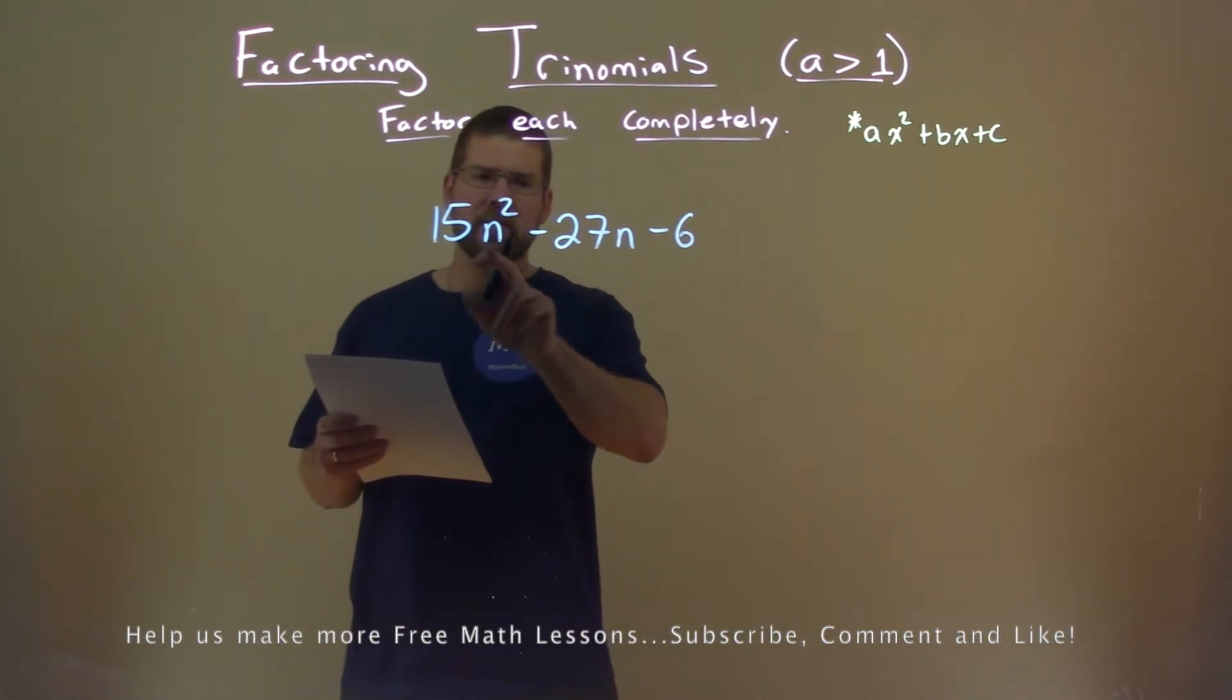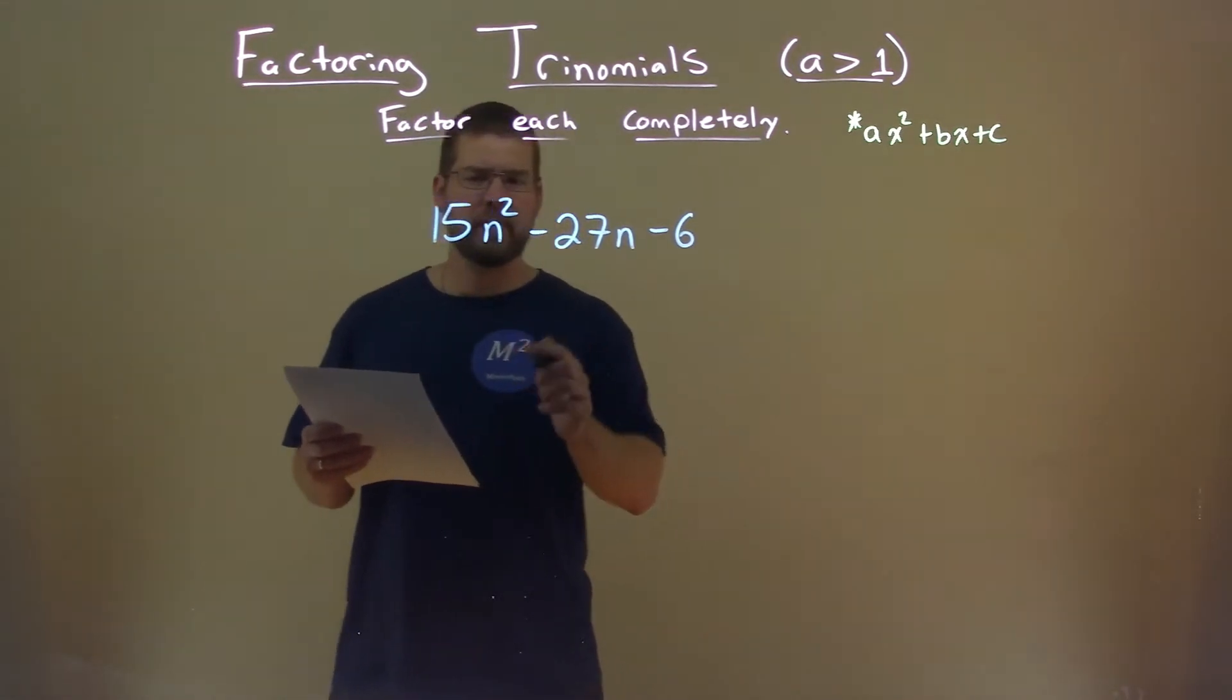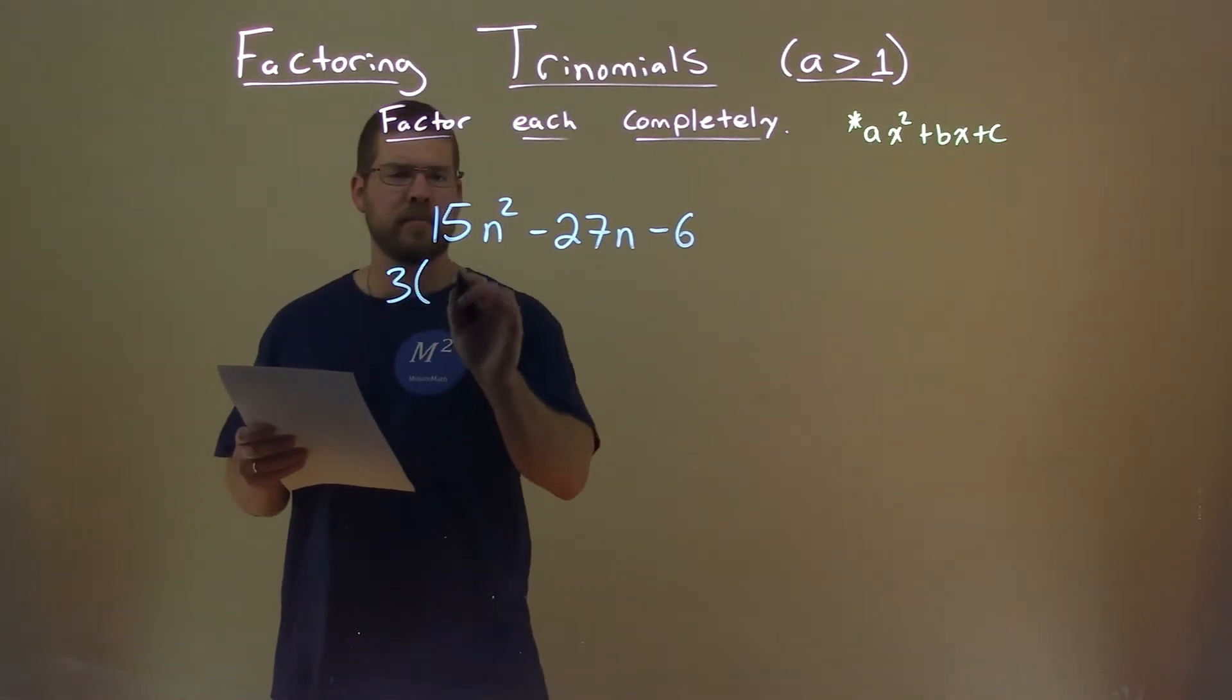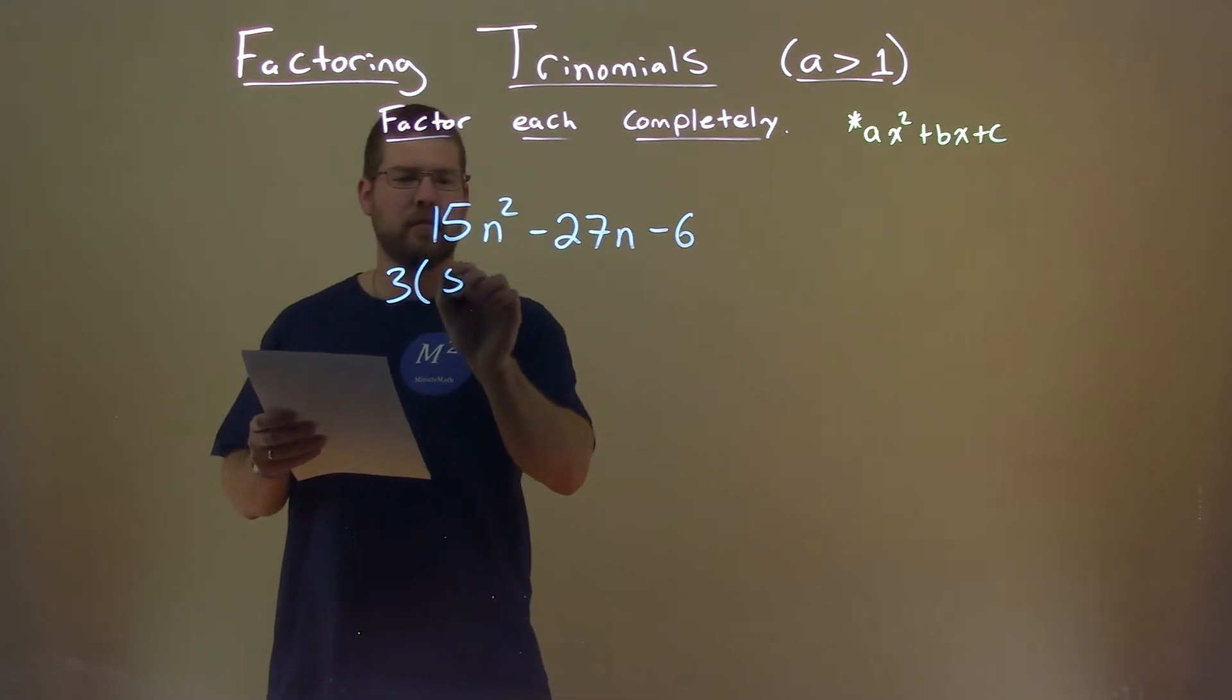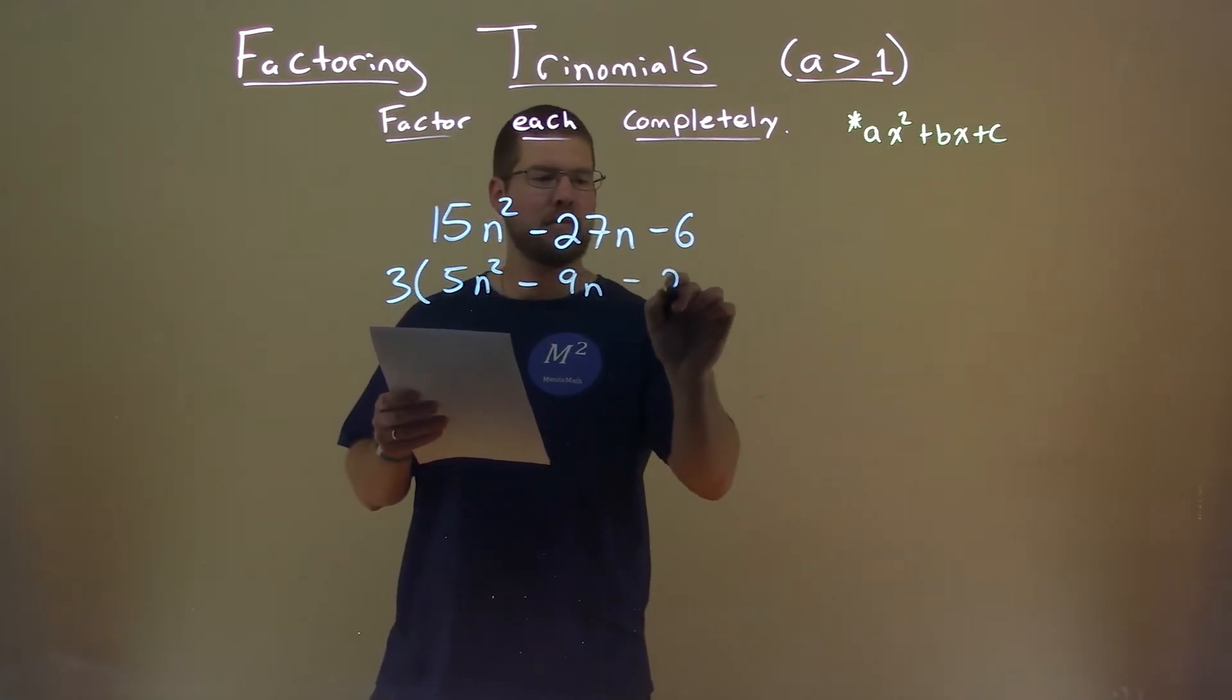I noticed all three of these values, a, b, and c, have a 3 in them. So we can pull that out. I'm going to pull out a 3 first. 3 goes in 15 five times, so we have 5n squared minus 9n minus 2.